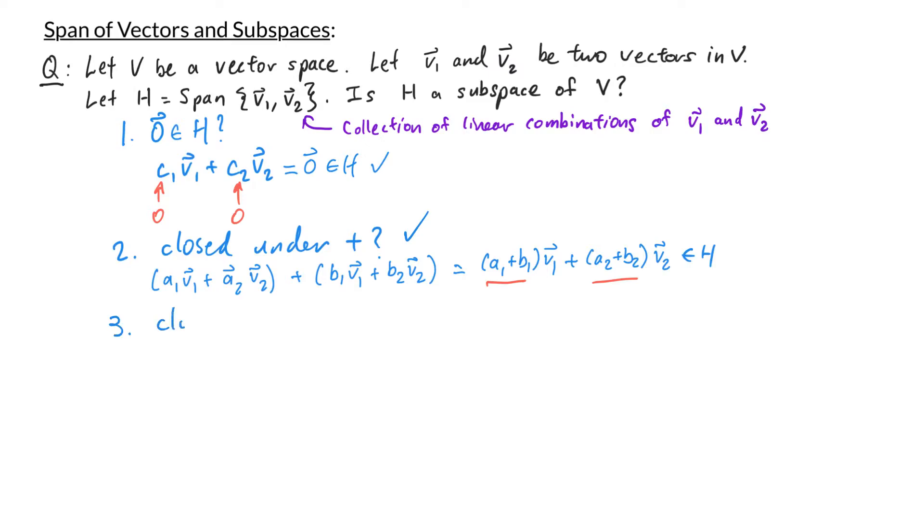Third property to check is that h is closed under scalar multiplication. To check this I want to take an arbitrary scalar and an arbitrary vector in h and see if that product is in h. So let's take the arbitrary scalar c and the arbitrary vector in h a1 v1 plus a2 v2. This product is ca1 v1 plus ca2 v2. Again notice that ca1 is just a scalar and ca2 is just another scalar. So this product is a linear combination of v1 and v2 therefore it's in h. And that confirms that h is closed under scalar multiplication.